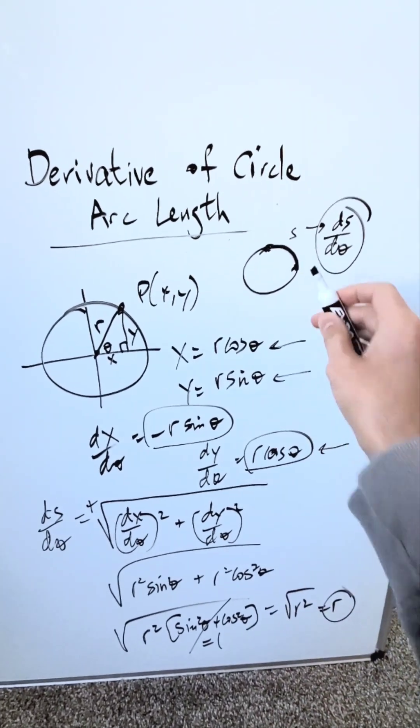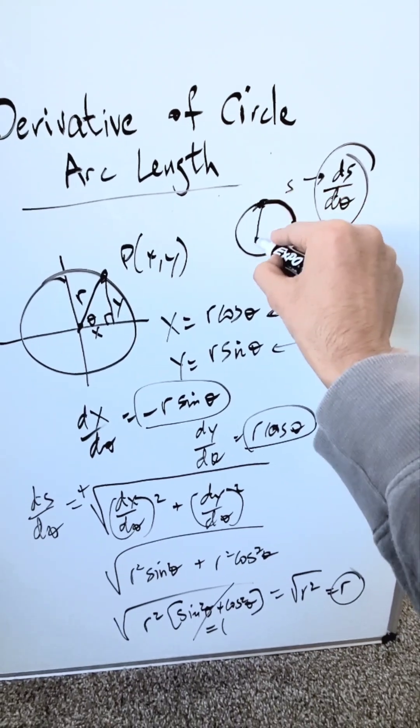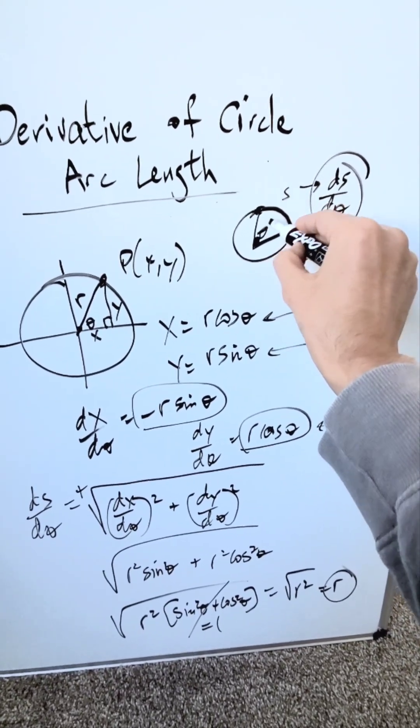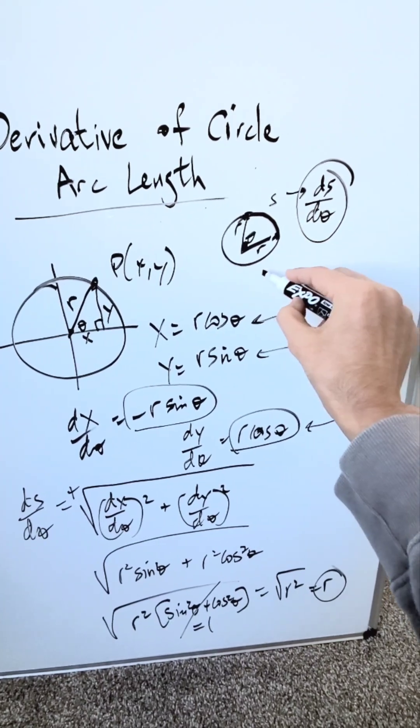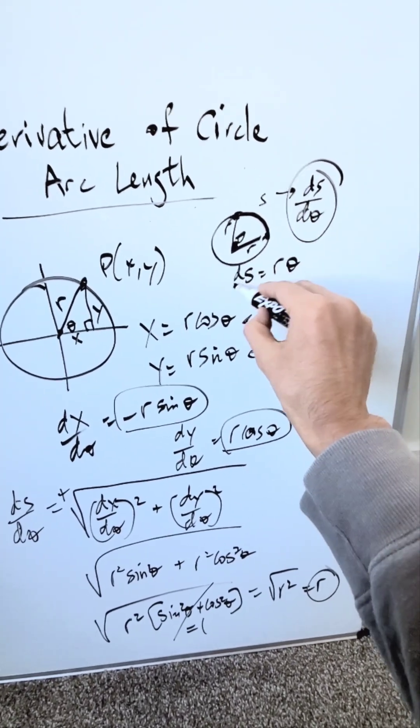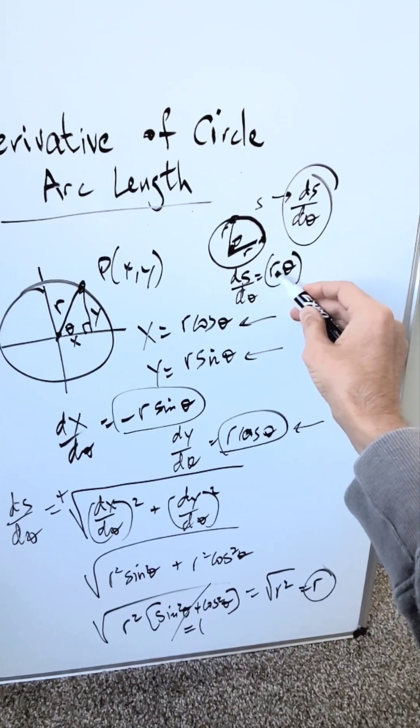Now let me show you a much easier approach. Looking at a portion of this circle - a sector with radius r - I know the arc length for that sector equals rθ.